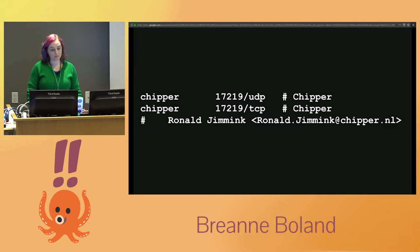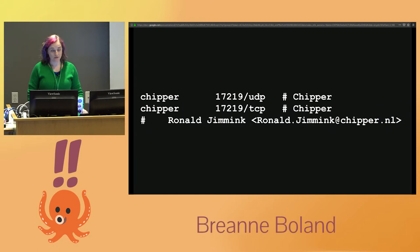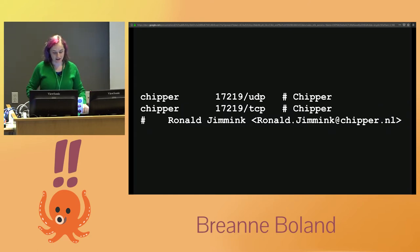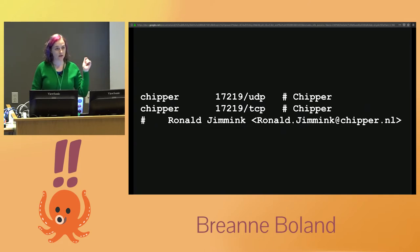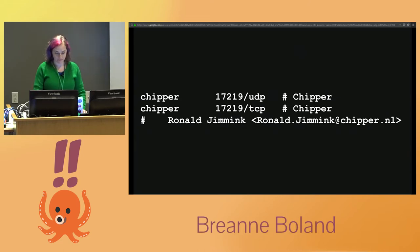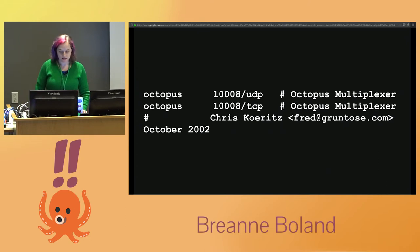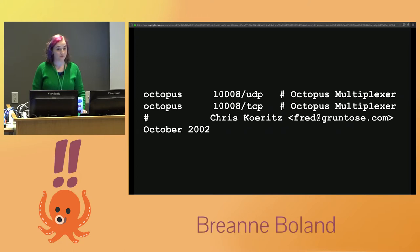Fewer people, I suspect, are familiar with Chipper at port 17219. I'll condense a giant internet rabbit hole for you — I wrote about it on my blog. It was one of two competing ePERS schemes in the Netherlands across the 90s and into the aughts. It did not win; one called Chipnip won, but it was retired in 2015. It's still in /etc/services just because someone claimed it and it hasn't been removed. Then there's Octopus at port 1008 — a professional multiprogram transport stream software multiplexer.